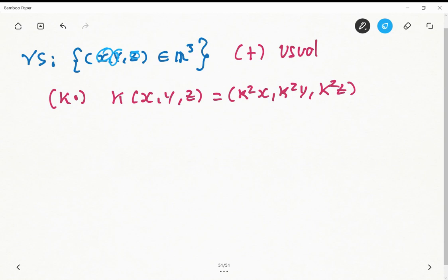And in this set we define the usual summation of vectors, that means component by component. However, we change the definition for this scalar multiplication, and we need to see if it is or is not a vector space.